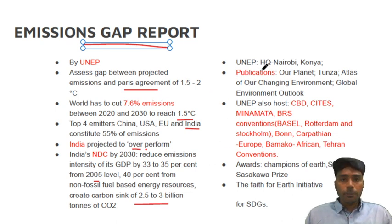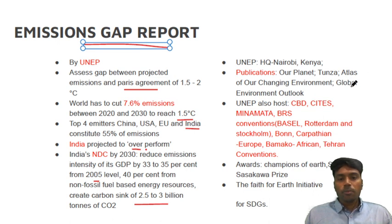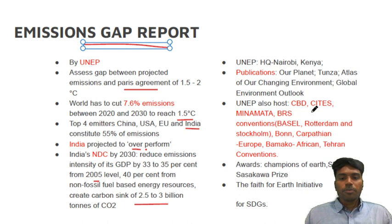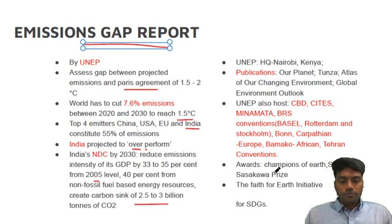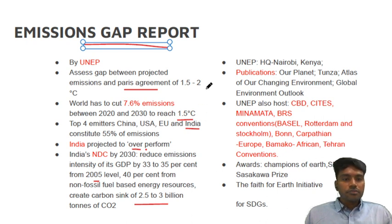A little bit of background on UNEP is also very important. Its headquarters is in Nairobi. Other publications include Our Planet, Atlas of Our Changing Environment, and Global Environment Outlook. Apart from this, UNEP hosts other conventions like the Convention on Biodiversity, BRS — that is Basel, Rotterdam, Stockholm — etc. It also gives the Champions of the Earth award. Let us go ahead and see certain questions on this.